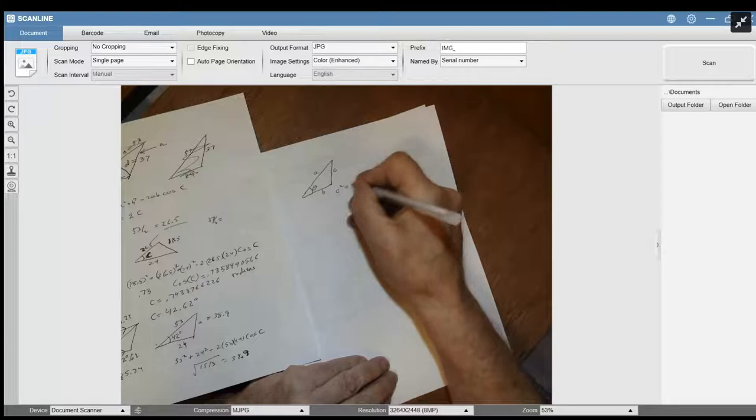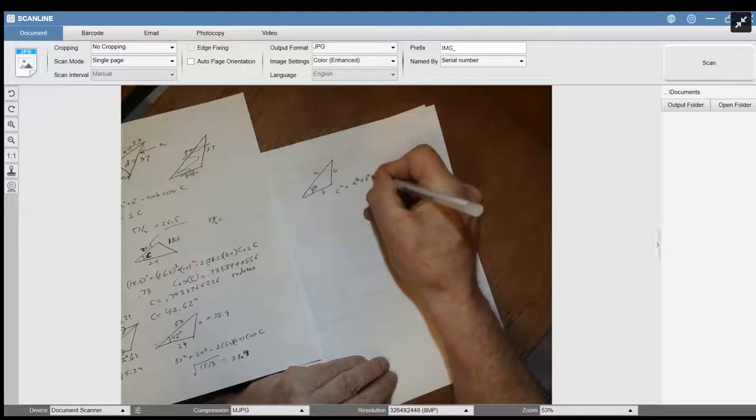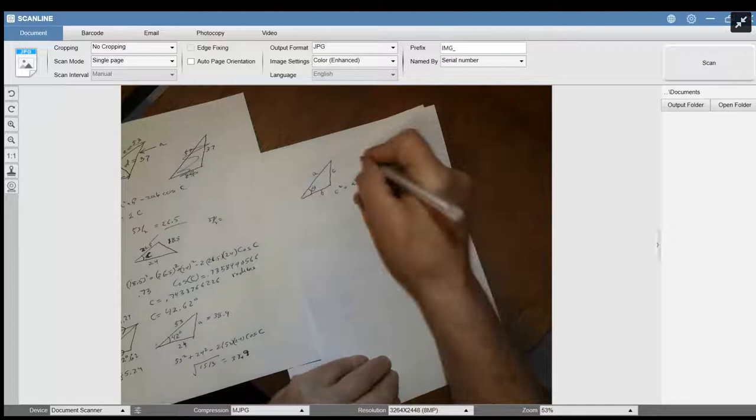that's equal to the square of the other two sides, the sum of those minus two times their product times the cosine of the angle. That's the law of cosines.